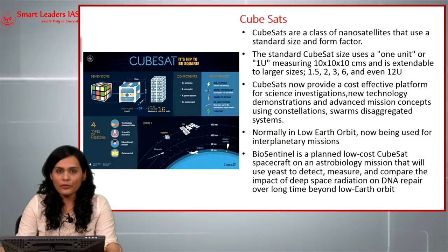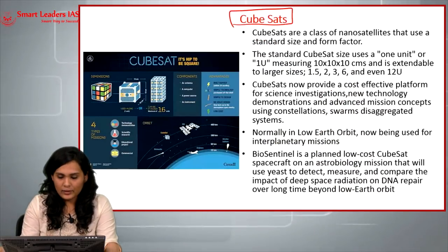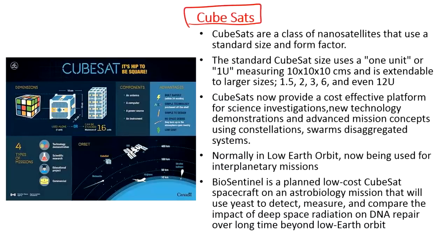The first topic for the day is about cube satellites. Cube satellites come under a class of nano satellites, meaning they are very small in size as well as weight. They are made of very few basic components necessary for their efficient survival, including an antenna, a computer, a power source, and an instrument to conduct various scientific experiments in space.